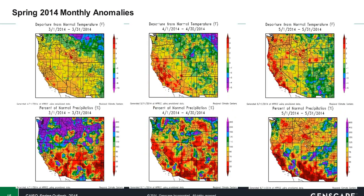Breaking this down into a monthly look back, after starting off with only slightly above-normal to normal conditions temperature-wise in the March timeframe, conditions did become increasingly warm, with May proving to be the most anomalous of the three months last year. Accompanying this cooler start was enhanced precipitation, especially confined to northwestern regions of the greater WEC area. As we progressed through the spring, conditions did become drier, with many areas seeing normal to below-normal conditions by the time May rolled around.